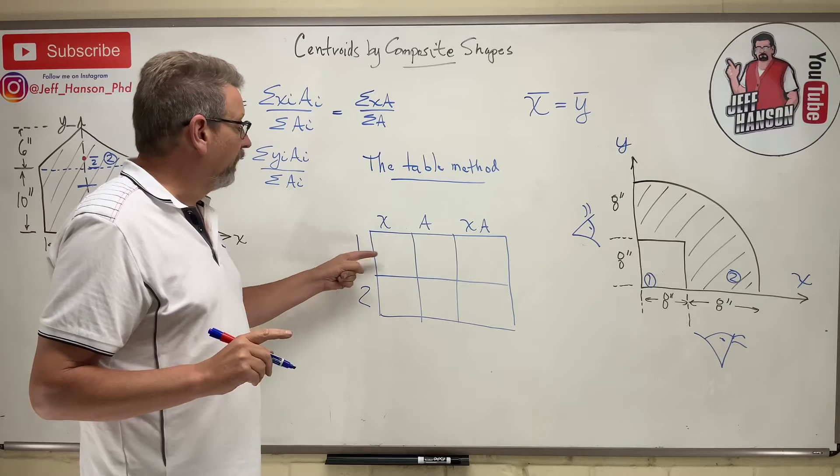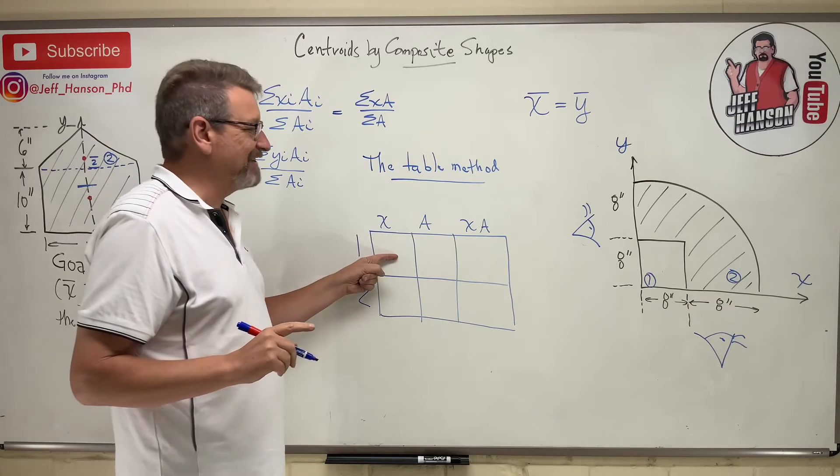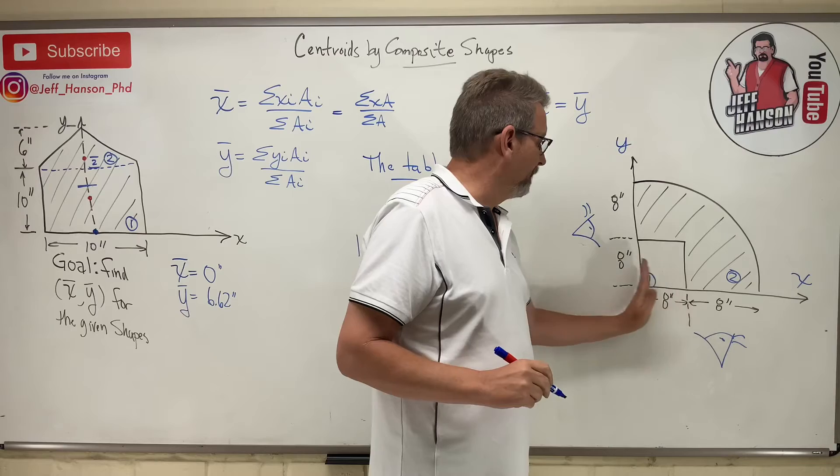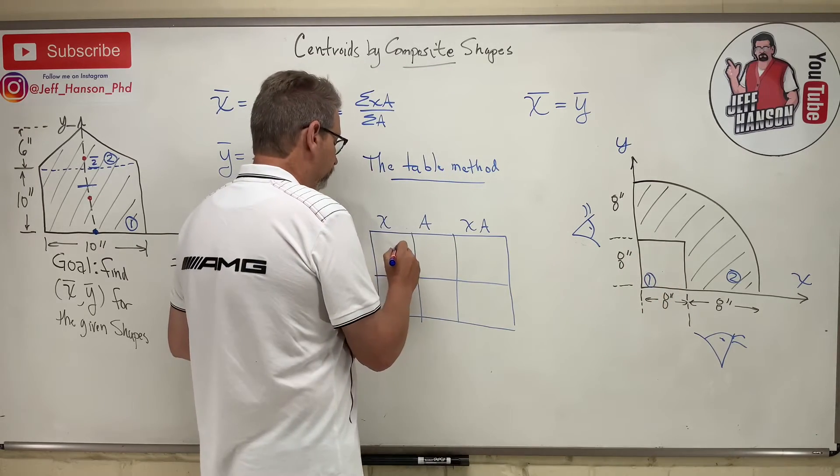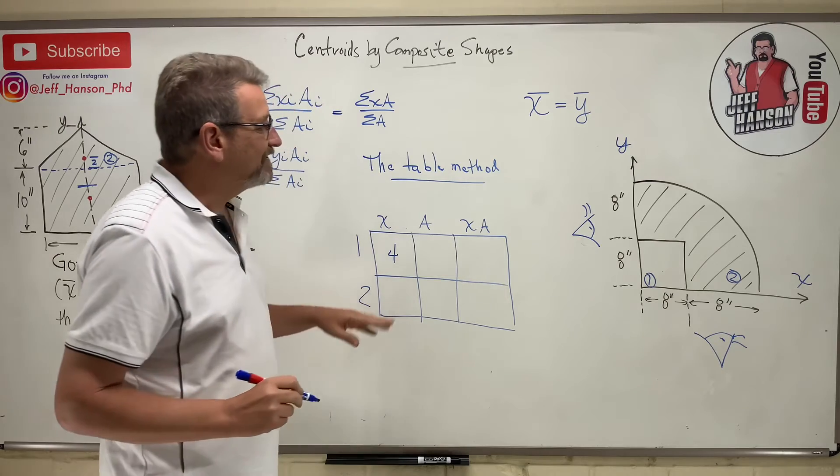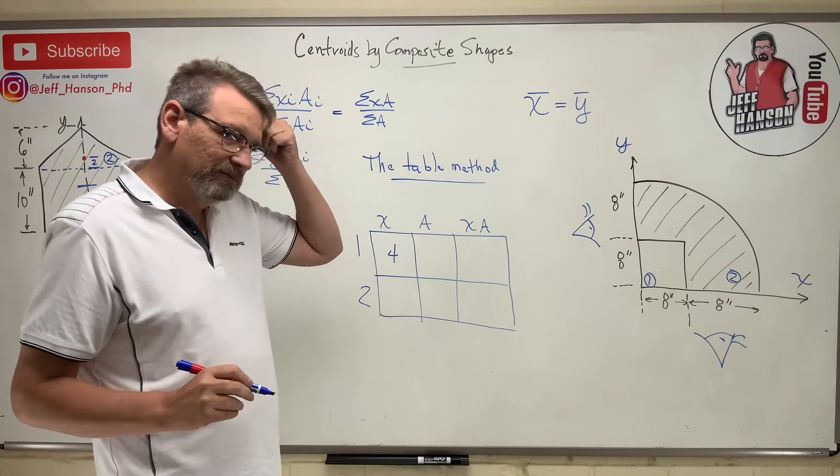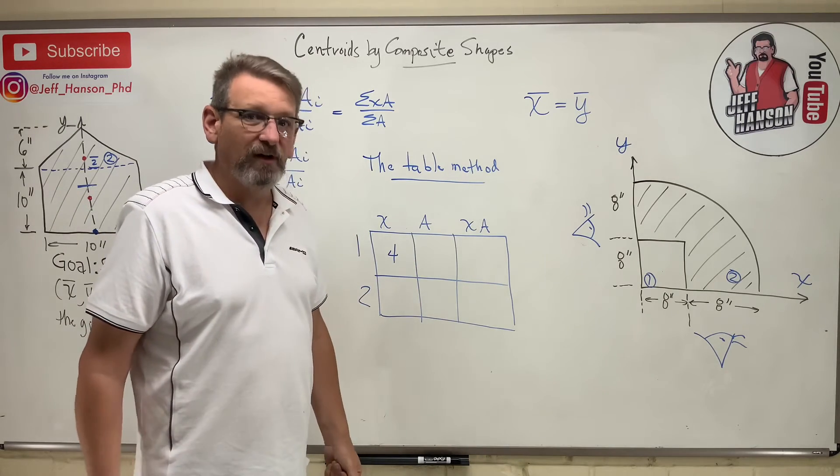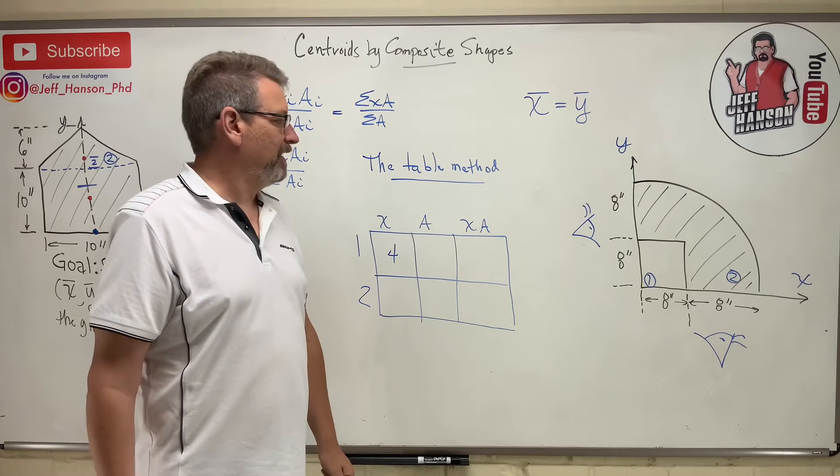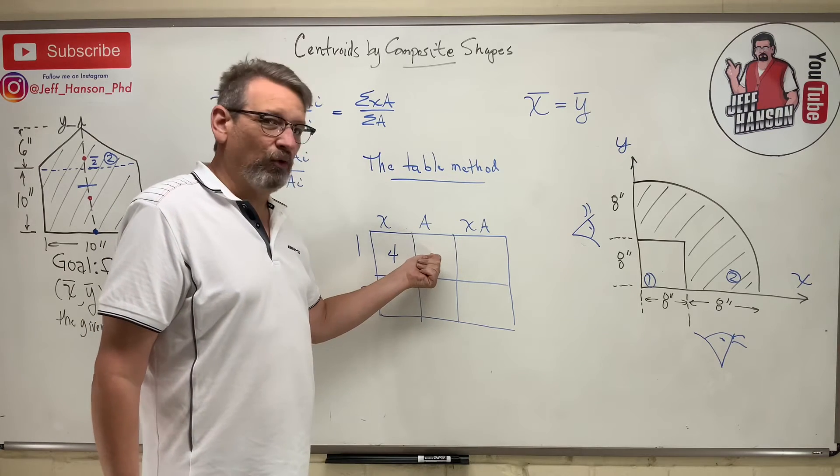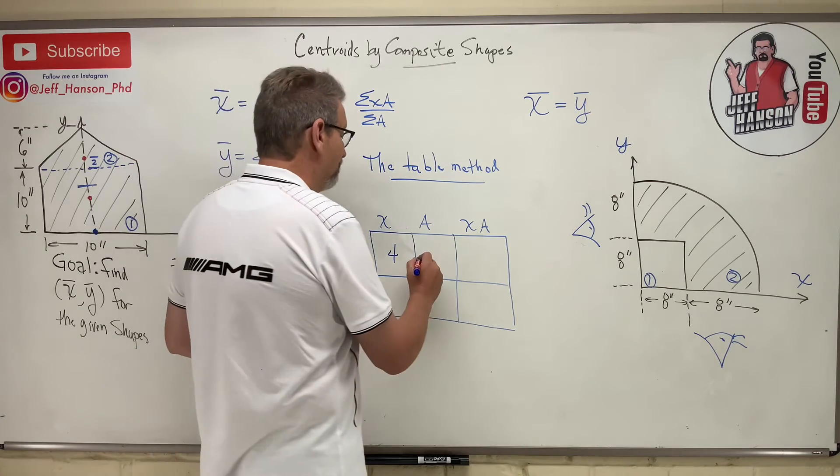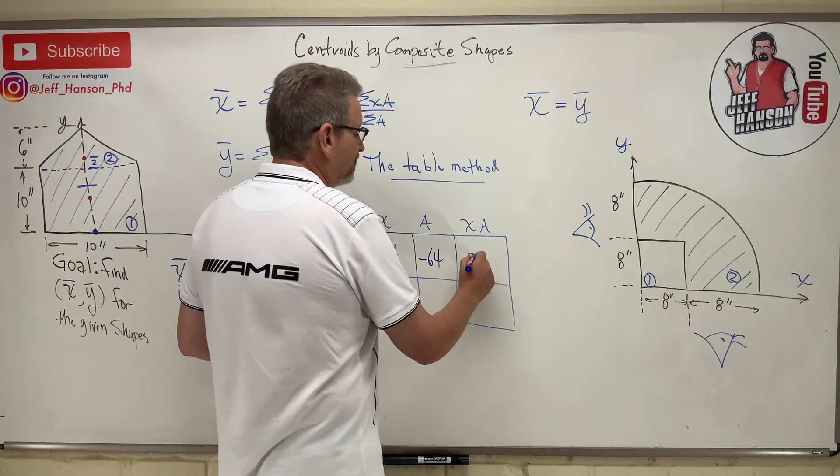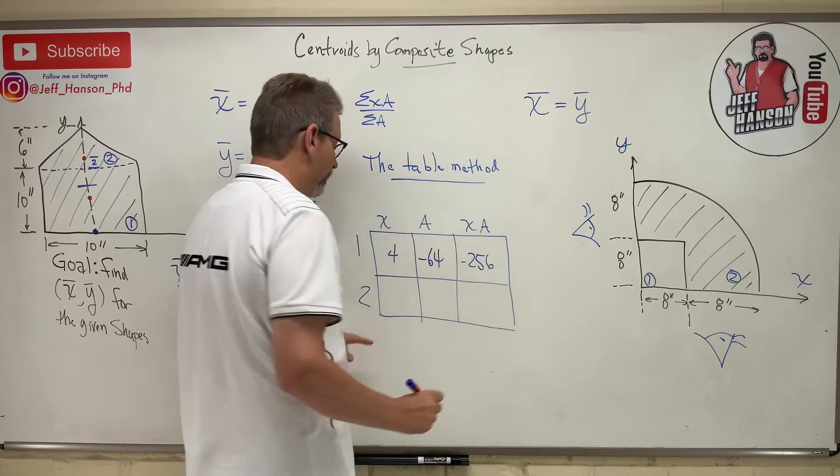So piece number one, what is X-bar for piece number one? X-bar for piece number one, it's a square. So it's half, it's four, isn't it? What is the area of piece number one? Did you say 64? It's wrong. Wait, what? Is that area really there? Oh, no, it's not. So it's minus 64, which this is minus 256.